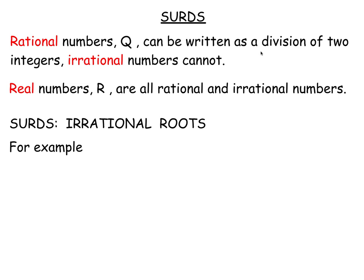The numbers involved are integers, that is whole numbers like 0, 1, 2, 3 and so on, and their negatives: negative 1, negative 2, negative 3 and so on. So rational numbers can be written as fractions. Irrational numbers cannot be written as fractions.